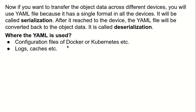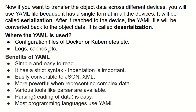So where is YAML used? YAML is used in configuration files of Docker and Kubernetes, and it is also used in logs and caches. What are the benefits of YAML? It is simple and easy to read. It has strict syntax — indentation is important, just like in Python where indentation is also important. YAML uses indentation functionality similarly.